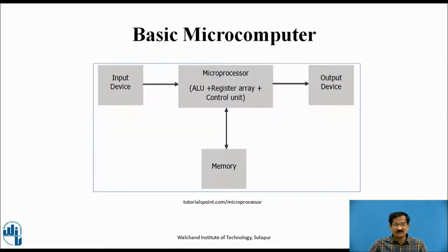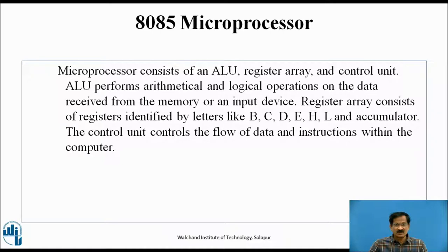Basic Microcomputer: The heart of this microcomputer is the microprocessor, which includes an arithmetic logic unit, a register array, and a control unit. This microprocessor is connected to input devices, output devices, and memory — together these comprise a microcomputer. The microprocessor's ALU performs arithmetical and logical operations on data received from memory.